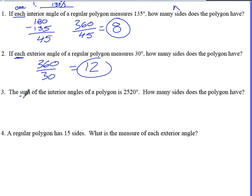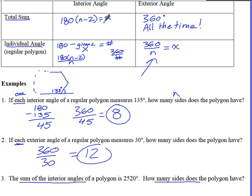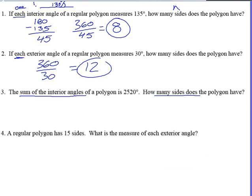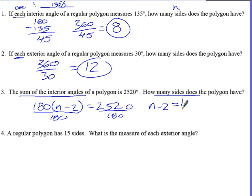Number three, it says the sum of the interior angles is 2,520. How many sides does it have? So when I'm talking about the sum of the interior angles, I'm talking about this formula here. And so I'm going to do 180 n minus 2 equals 2,520. So now from here, I think it's easier to just divide by 180. Now we have n minus 2 equals 14. Add 2 to both sides. We get n is equal to 16. So that's how many sides that shape has.